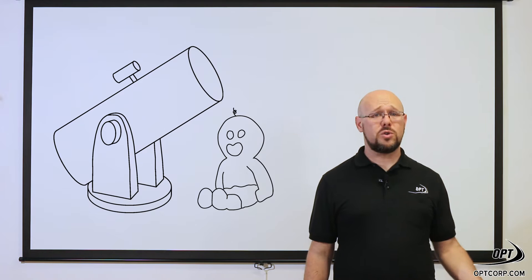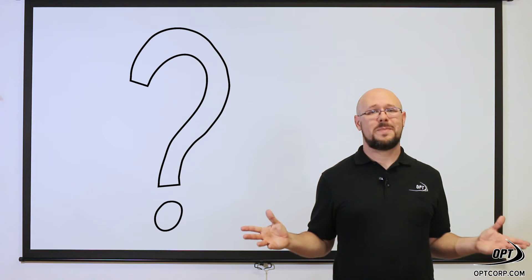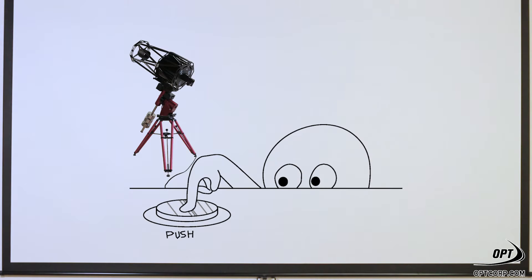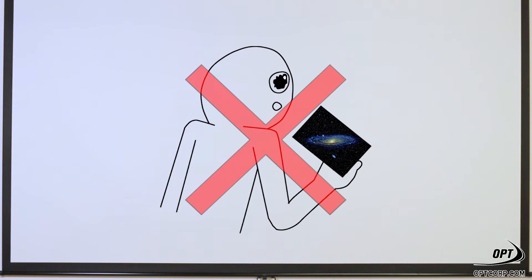Now for those of you who are new to the hobby you may be asking yourself, why do I need to balance an equatorial mount? Can't I just point it towards the North Pole, turn it on and have it take great pictures? Not exactly.